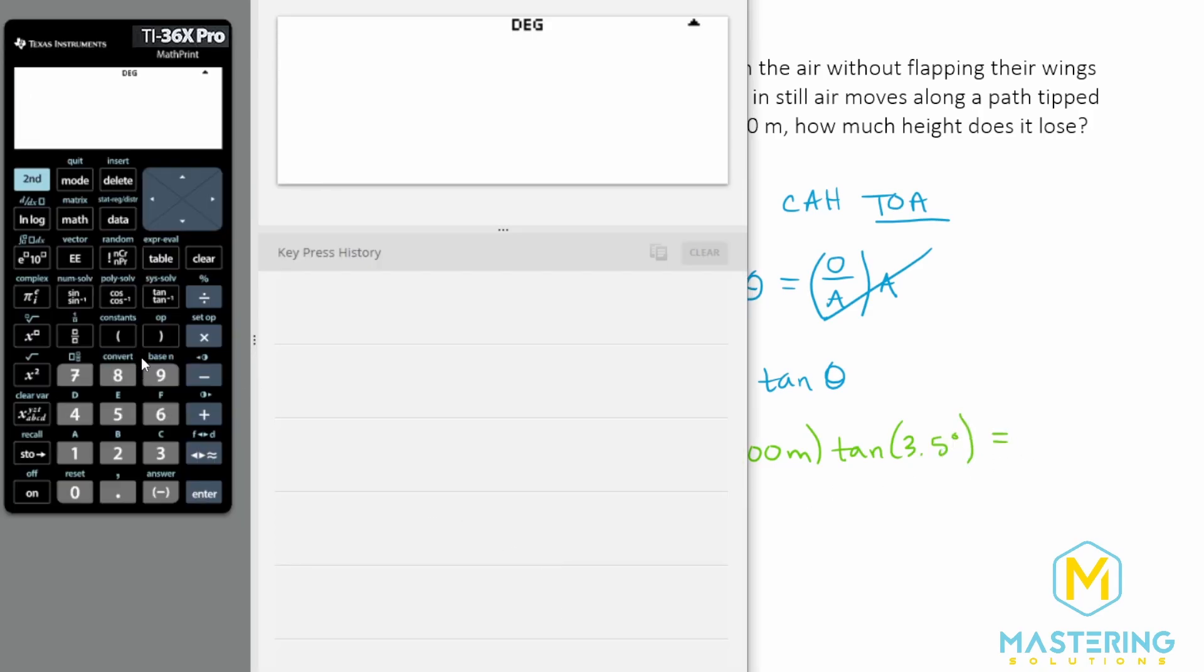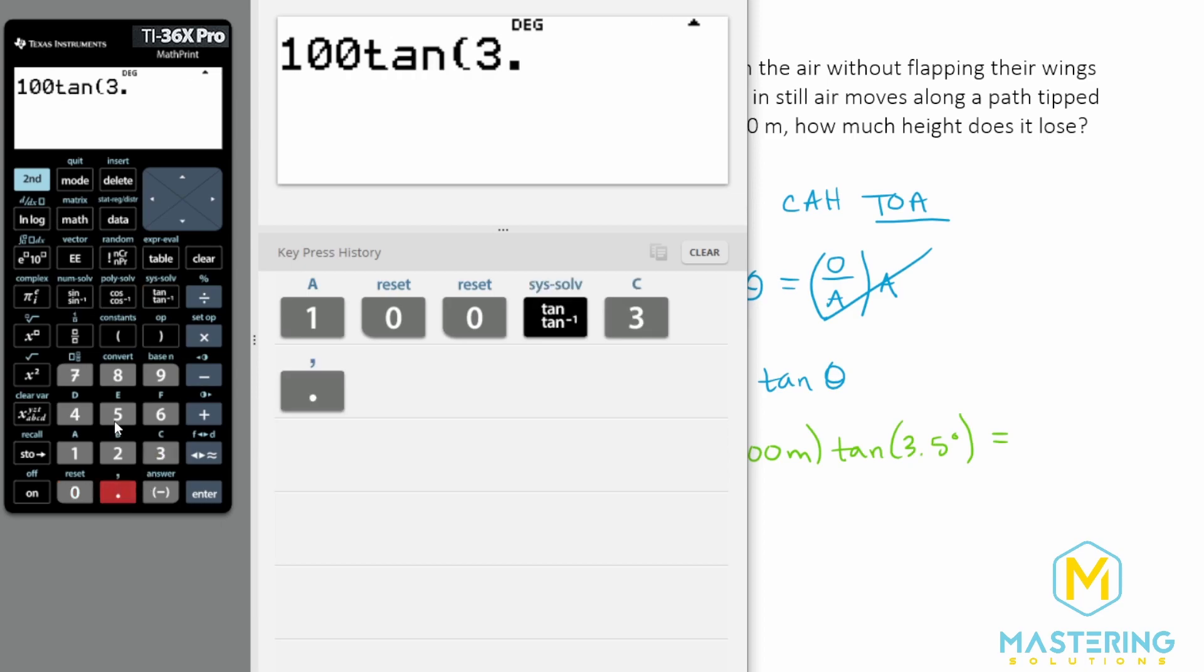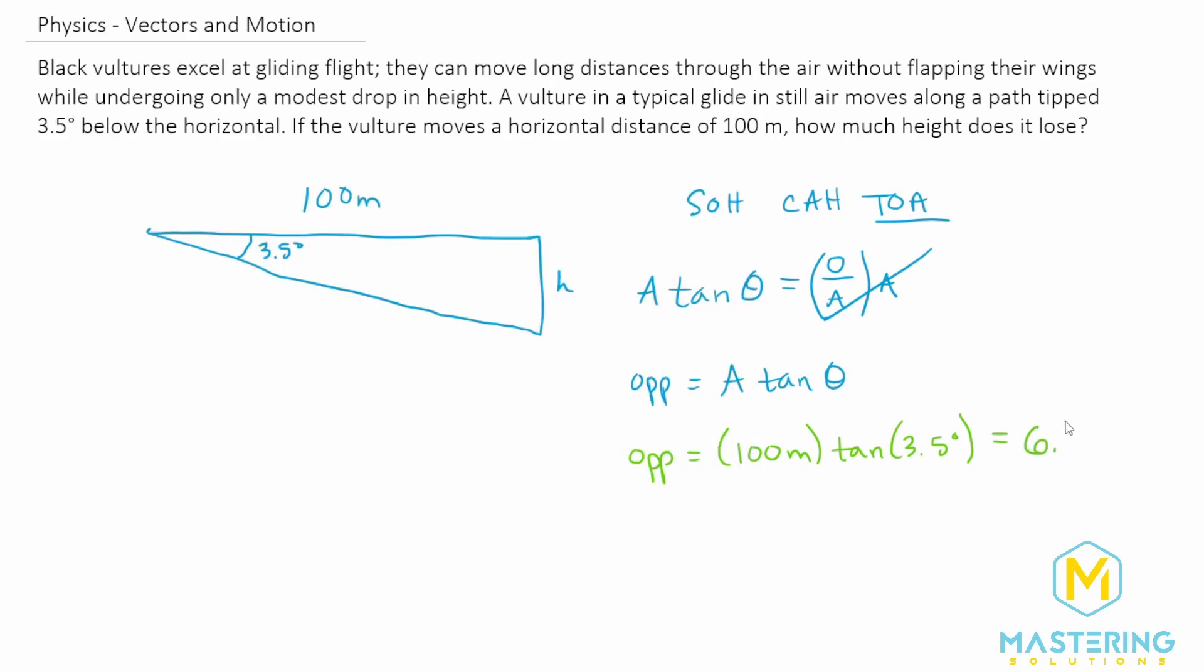and make sure your calculator is in degree mode. So that will give us 100 times the tangent of 3.5, and we have 6.12. Well, let's just round it to 6.1 meters drop in height.